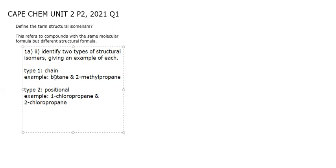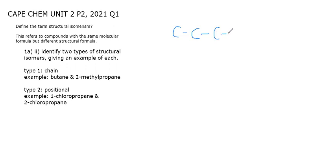In chain isomerism we are actually rearranging the carbon atoms. For example, butane and 2-methylpropane. Let us draw that. So butane — we know that should have four carbon atoms.